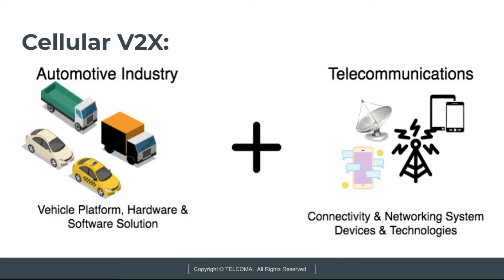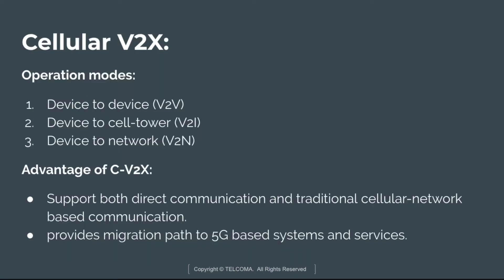The operation modes of Cellular V2X are: device-to-device, device-to-cell tower, and device-to-network — also referred to as vehicle-to-vehicle, vehicle-to-infrastructure, and vehicle-to-network.